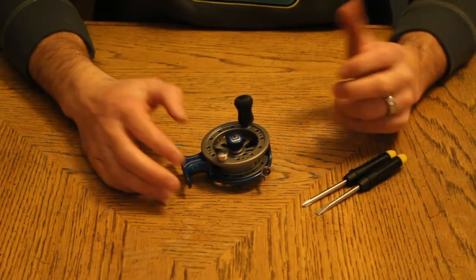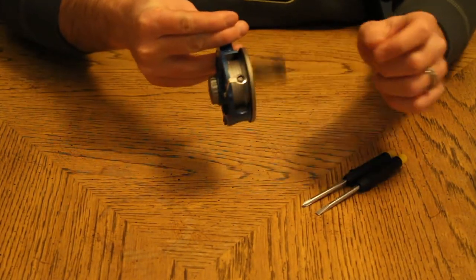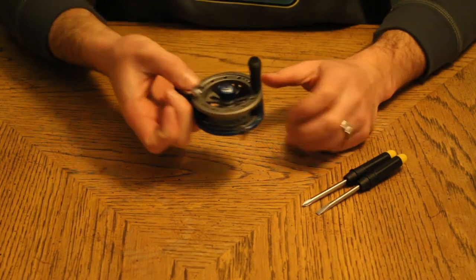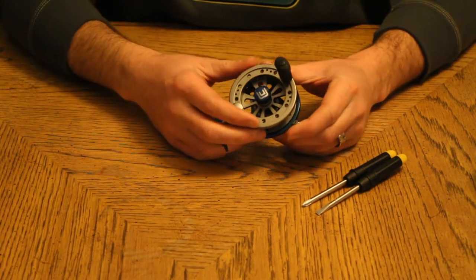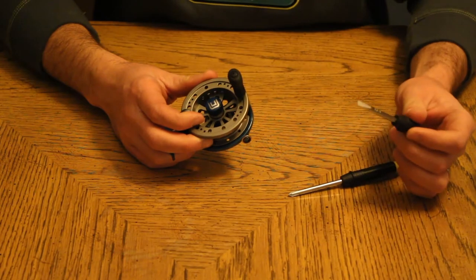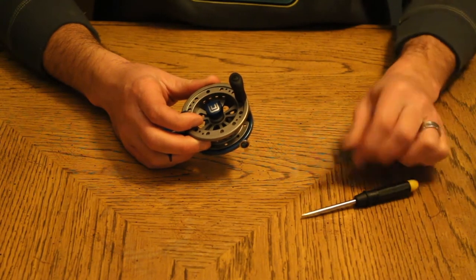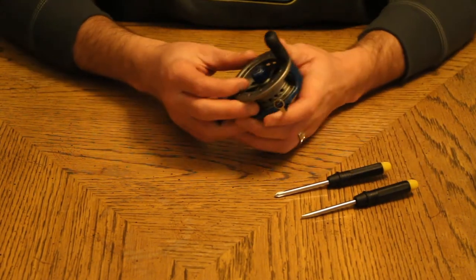These reels come out of the box as a left handed retrieve and it's really a couple easy steps to switch it to a right handed retrieve. All you need is a flat head screwdriver and a phillips screwdriver. So here we go.